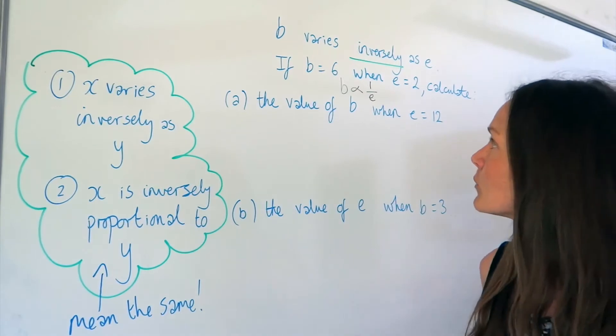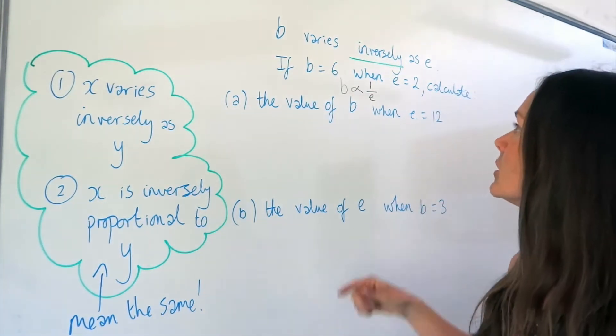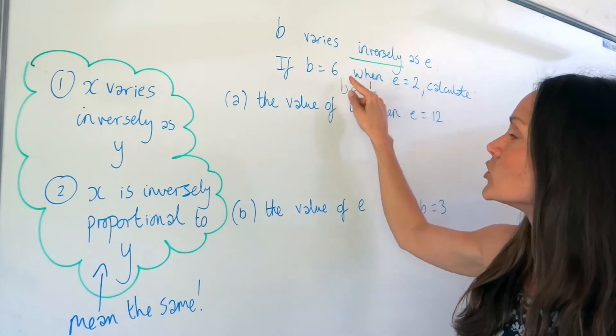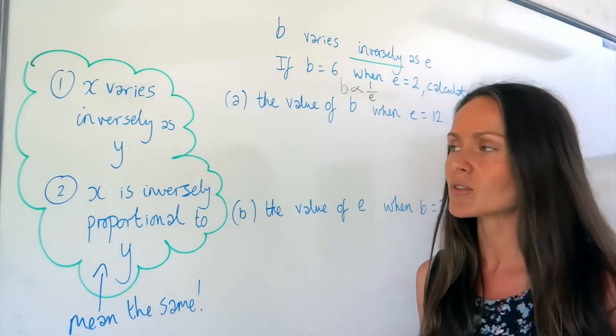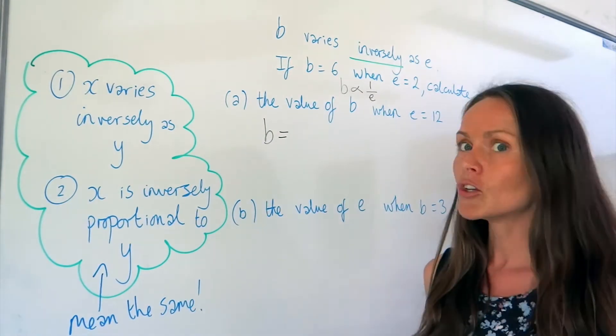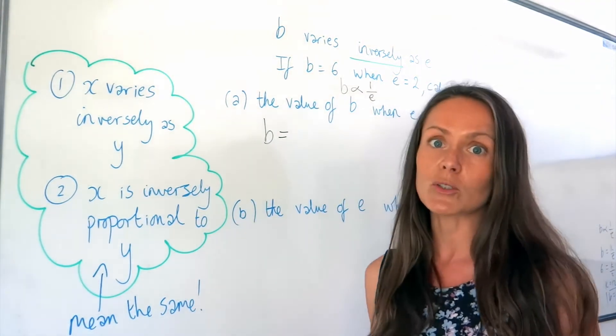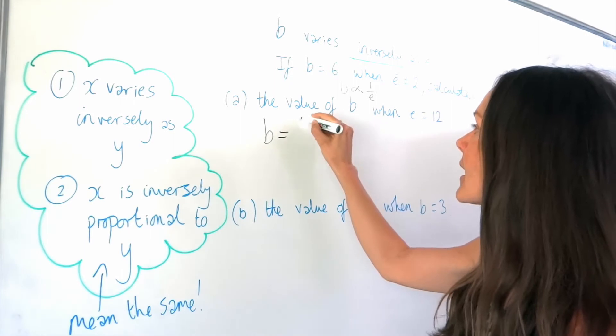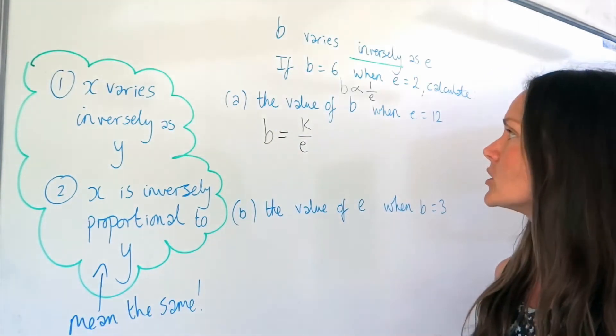Now, just as before, like in those other questions in variation, you need to turn this into a real equation with an equal sign. So when you change that symbol to an equal sign, you need to include a constant, which we usually call K. And K is the numerator in this equation.